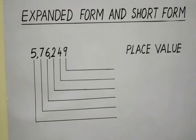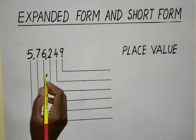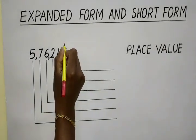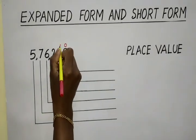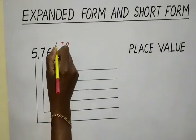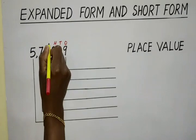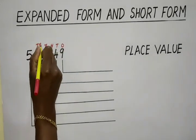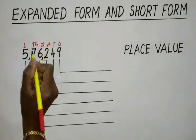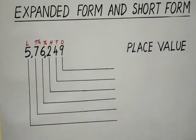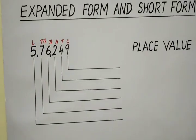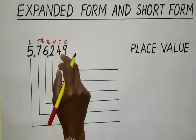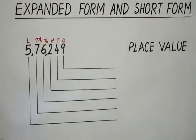The first step: we write the place where each digit is placed — that is ones, tens, hundreds, thousands, ten thousands, and lakh. Next step, we are going to write the place value of each digit.